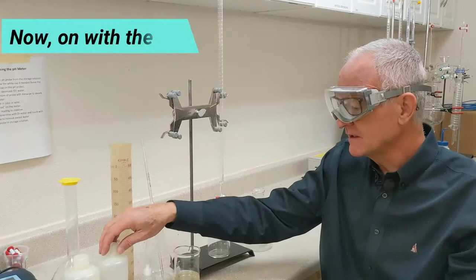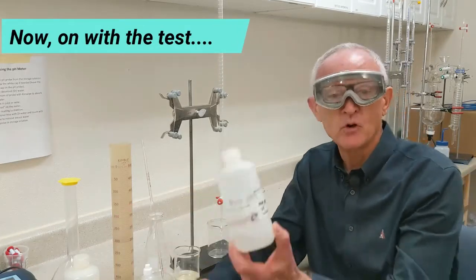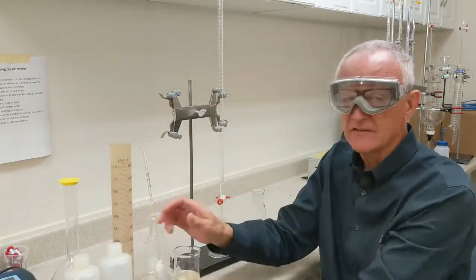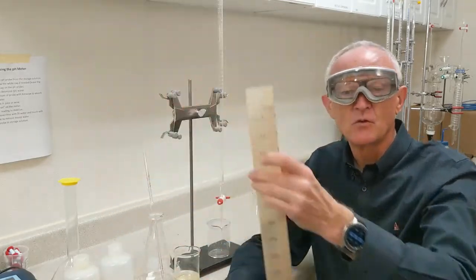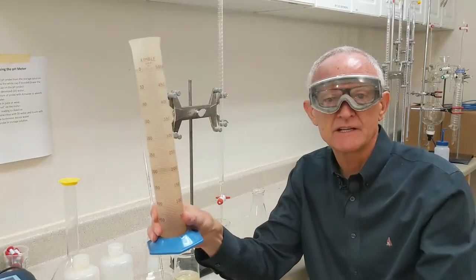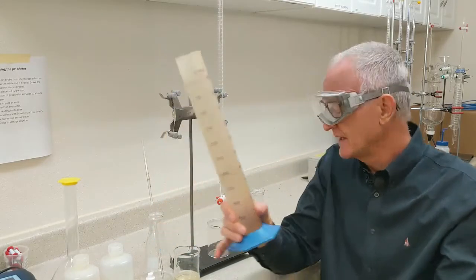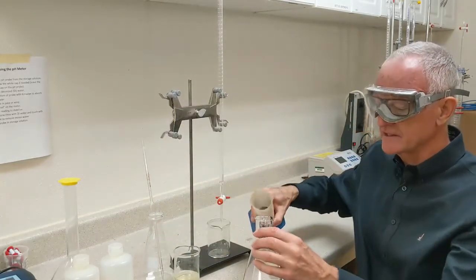I've got all that I need here. I've got 0.1 normal sodium hydroxide, I've got phenolphthalein. I have put 200 mils of water in this graduated cylinder. I'm going to add that to my flask.